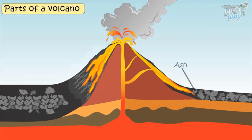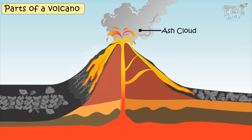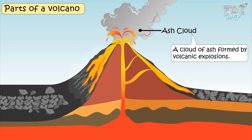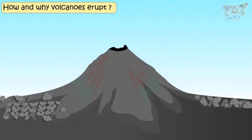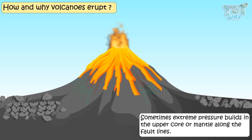Ash refers to fragments of lava or rock smaller than two millimeters in size that are blasted into the air by volcanic explosions. An ash cloud is a cloud of ash formed by volcanic explosions. Sometimes extreme pressure builds up across the fault lines, and a sudden eruption occurs, causing molten matter and ash to come out of the opening in the earth called the vent.